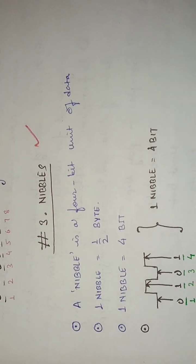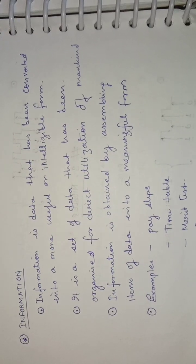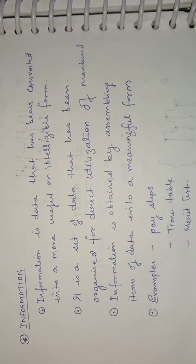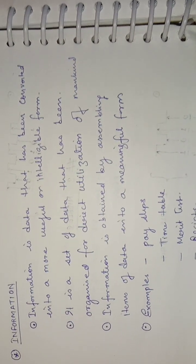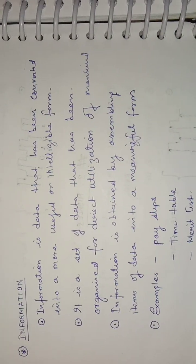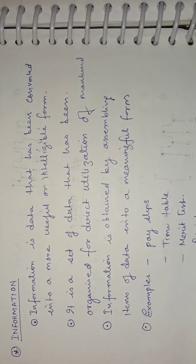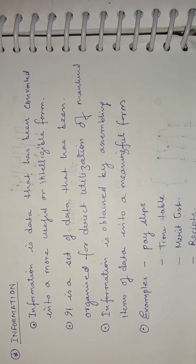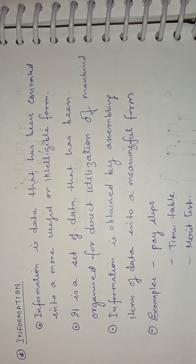Now let us talk about information. Information is data that has been converted into a more useful or intelligible form. We talked about data as raw, unorganized facts that can be represented electronically with the help of bits, bytes, and nibbles. When we accumulate a lot of data in a particular meaningful sense, that makes information. Information is a set of data that has been organized for direct utilization by mankind.